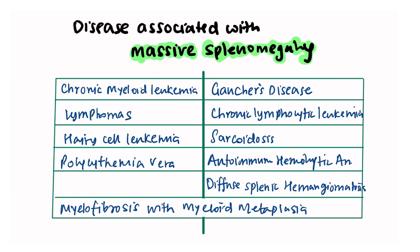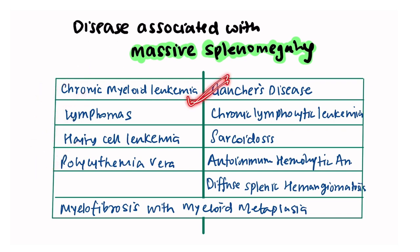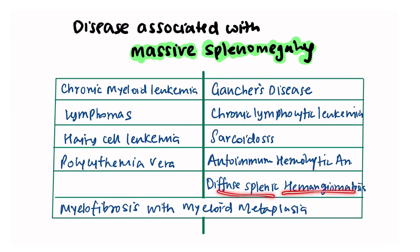Diseases causing massive splenomegaly is a very common question asked during bedside rounds, viva, or in class. Massive splenomegaly can be seen in chronic myeloid leukemia, lymphomas, hairy cell leukemia, polycythemia, Gaucher's disease, chronic lymphocytic leukemia, sarcoidosis, autoimmune hemolytic anemias, diffuse splenic hemangiomatosis, and myelofibrosis with myeloid metaplasia.